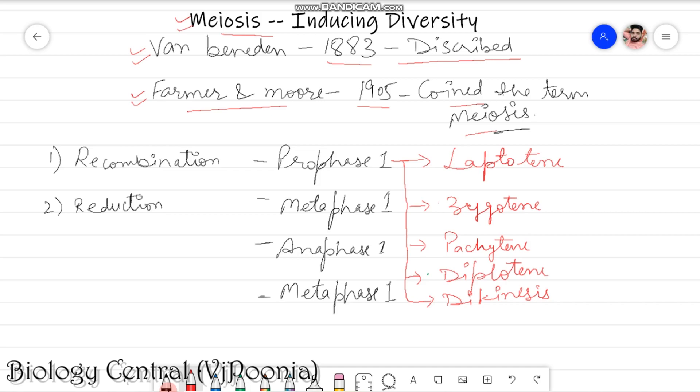Meiosis is completed into M1 and M2, but M1 is more important. M2 is just like mitosis. M1 completes into four phases or you can say two major phases: one is recombination and second is reduction. Recombination is only completing in prophase 1 and rest of the three phases are responsible for the reductional division.